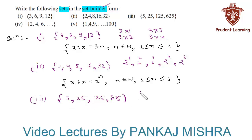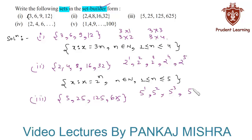In our third section, the given set is {5, 25, 125, 625}. Here 5 can be written as 5¹, 25 as 5², 125 as 5³, and 625 as 5⁴.